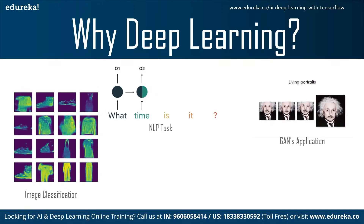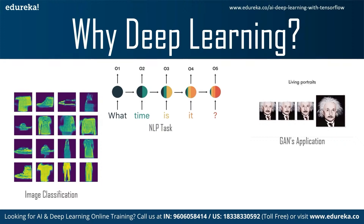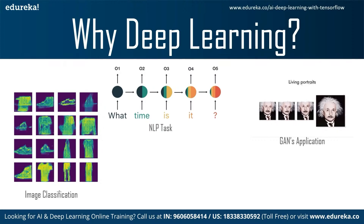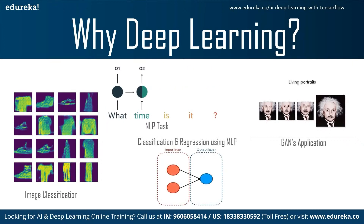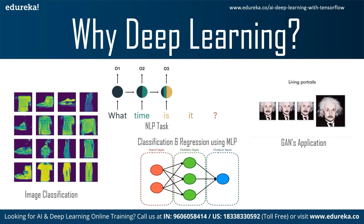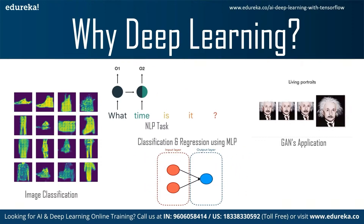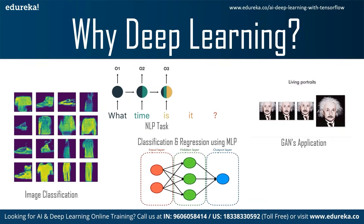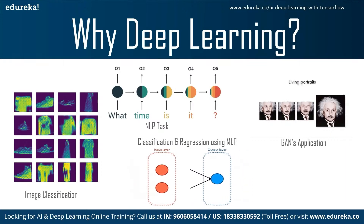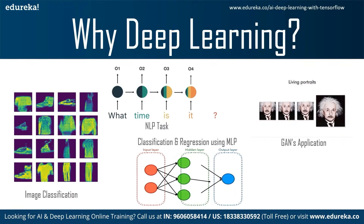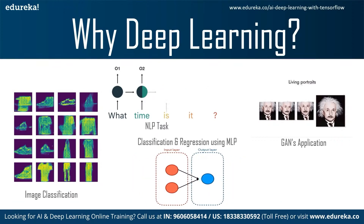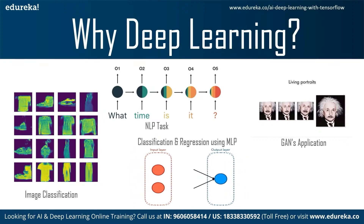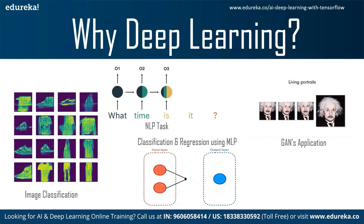Moving on, GANs — Generative Adversarial Networks — are an unsupervised part of deep learning. Common applications include deep fakes and more. Finally, for classification and regression tasks, we use multi-layer perceptrons. In machine learning we had algorithms like decision trees, random forests, linear regression, or logistic regression, but when we perform classification using MLP we get very high accuracy, even compared to SVM and decision trees.